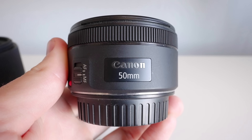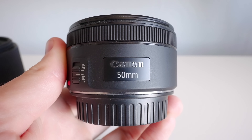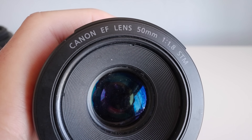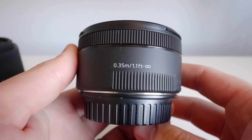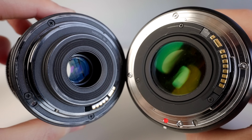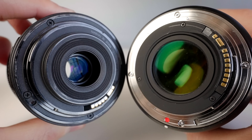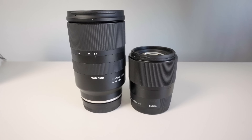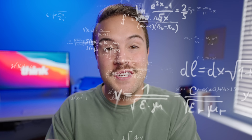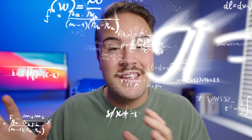So you're looking to buy a lens, but you have no idea what 50 millimeter means or what an f-stop is and all the numbers on the lenses. You just don't know what they mean and you're not sure what lens to get for your camera. Today I'm gonna make it super simple for you to understand what all the numbers mean on the lenses so that you can get the right lens for you.